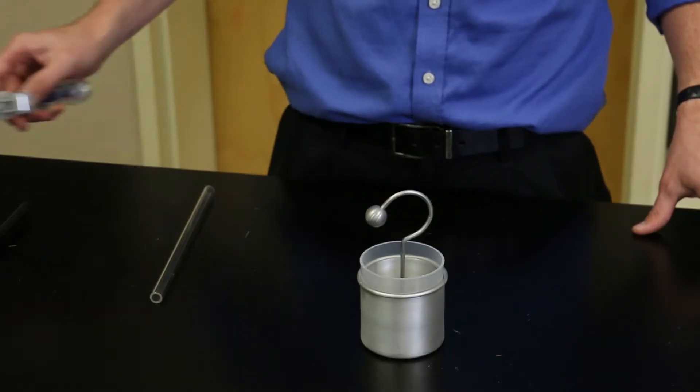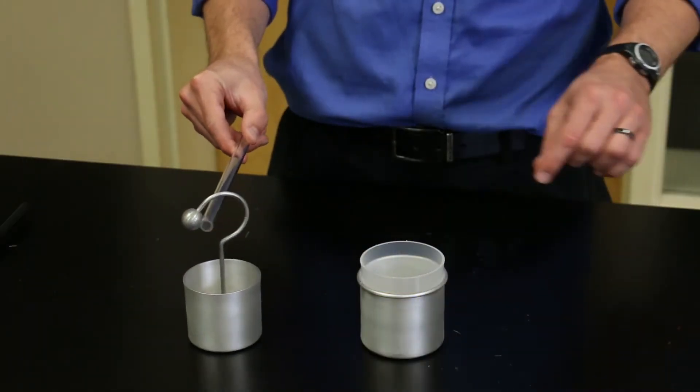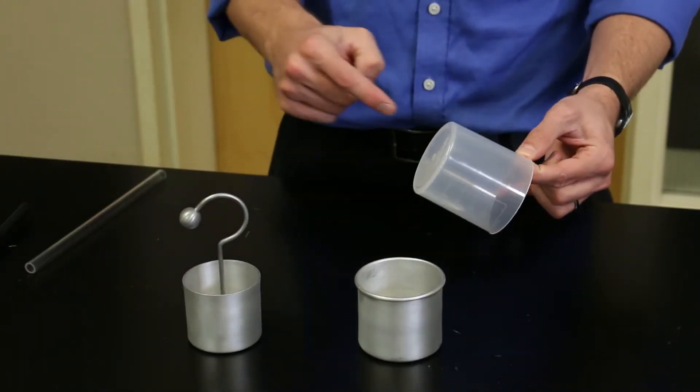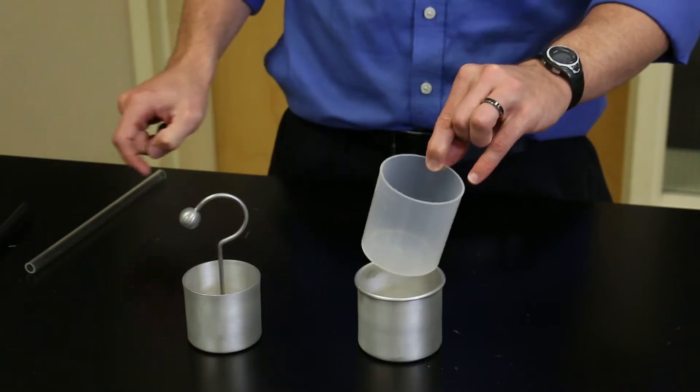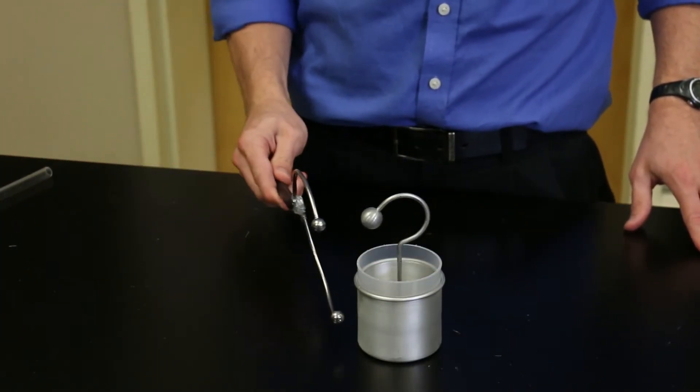When we first charged up the Leyden jar, most of the charge was on the inside surfaces of the metals, hugging the plastic. So then when we separate the pieces, the charge remains stuck on the plastic. And charge can't move on an insulator. So then when we reassemble, most of the charge is still there.